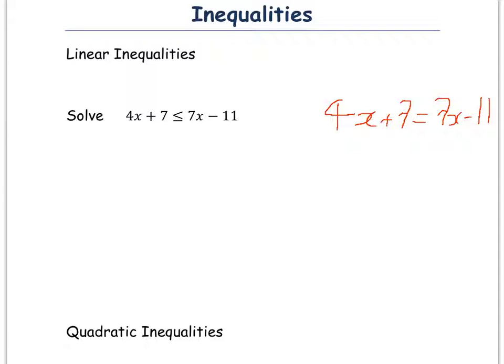So remember all you do now is you think, I'll leave the highest amount of x where it is, so the 7x, and I'm going to subtract 4x from both sides.